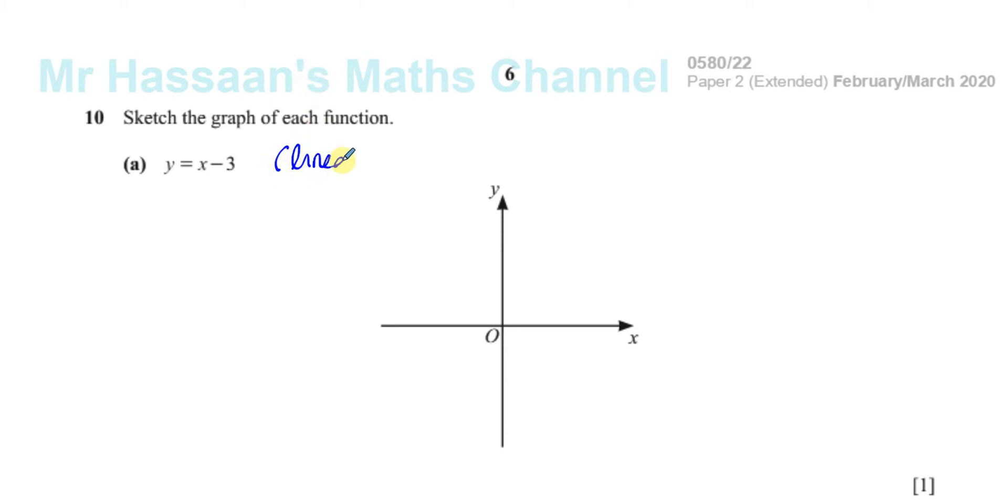A linear function gives a straight line. And this is in the form where y is the subject of the formula. So this is in the form y equals mx plus c.